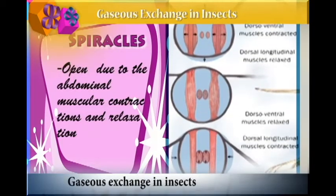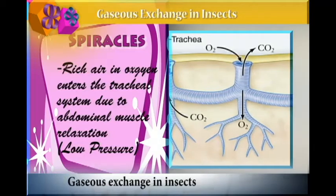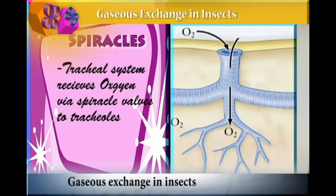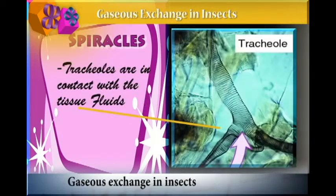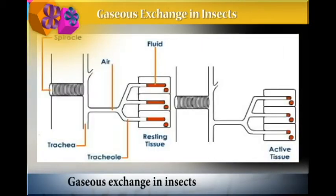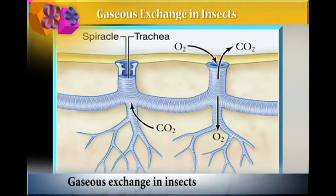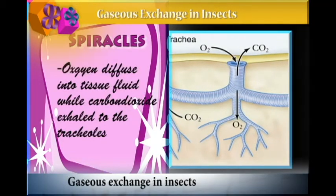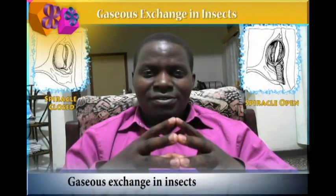In summary: breathing takes place via the spiracles, which open due to abdominal muscular contraction and relaxation. Air rich in oxygen enters the tracheal system due to abdominal muscle relaxation, when internal pressure is low. The tracheal system transports oxygen to the tracheoles, which are in contact with the tissue fluids. Oxygen diffuses from the tracheoles into the tissue fluids, while carbon dioxide is exhaled into the tracheoles and transported back through the spiracle valves to the outside of the insect.